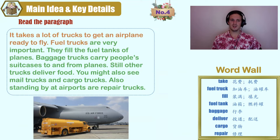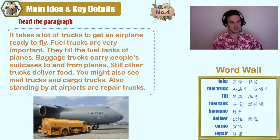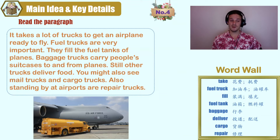It takes a lot of trucks to get an airplane ready to fly. Fuel trucks are very important — they fill the fuel tanks of planes. Baggage trucks carry people's suitcases to and from planes. Still other trucks deliver food. You might also see mail trucks and cargo trucks. Also standing by at airports are repair trucks.